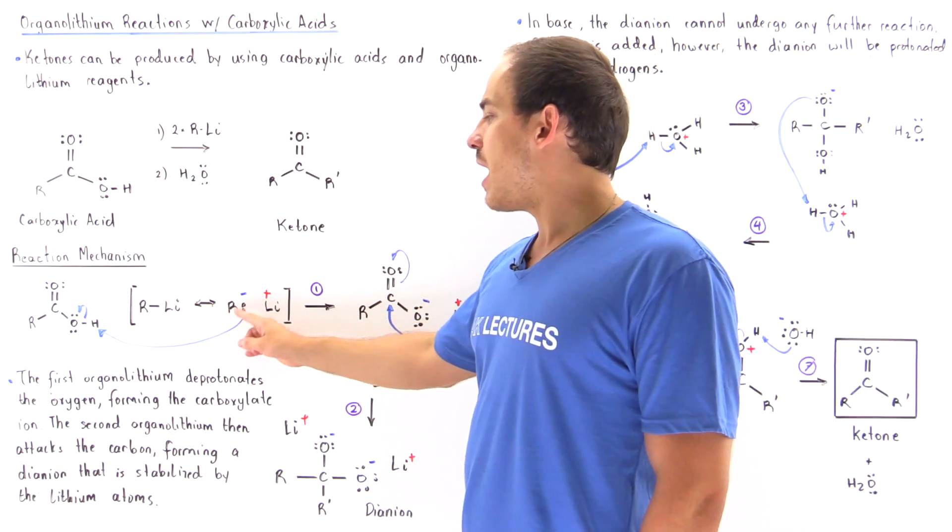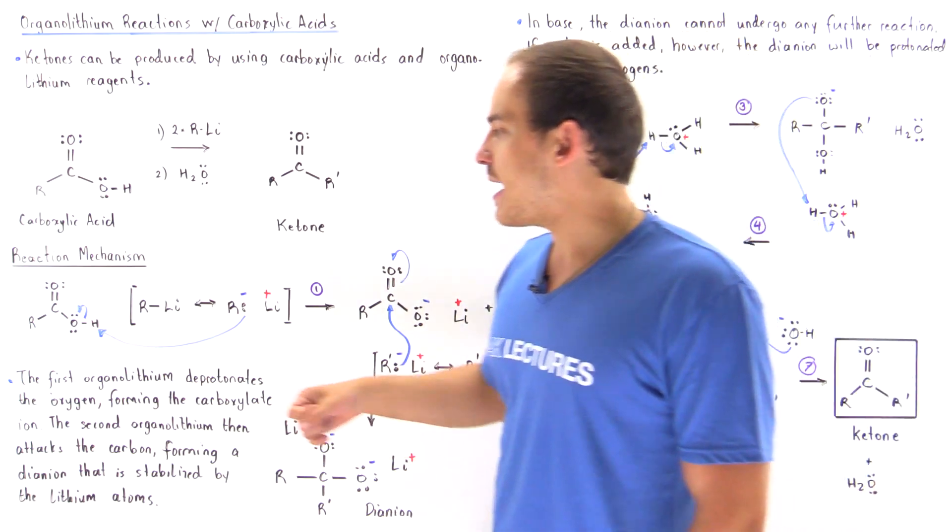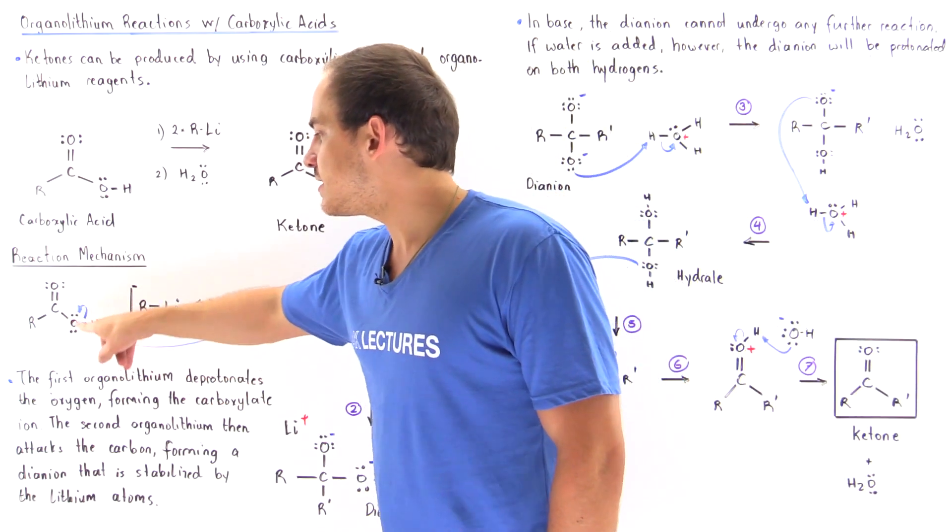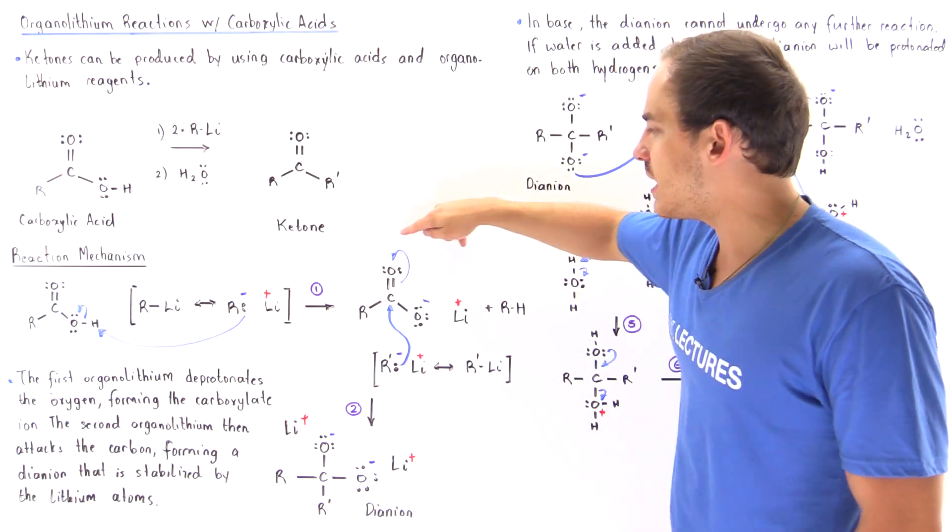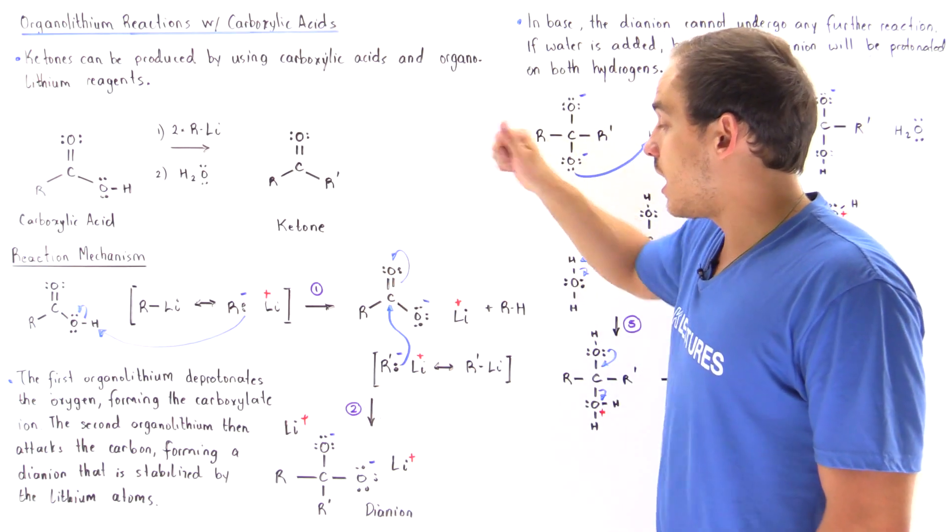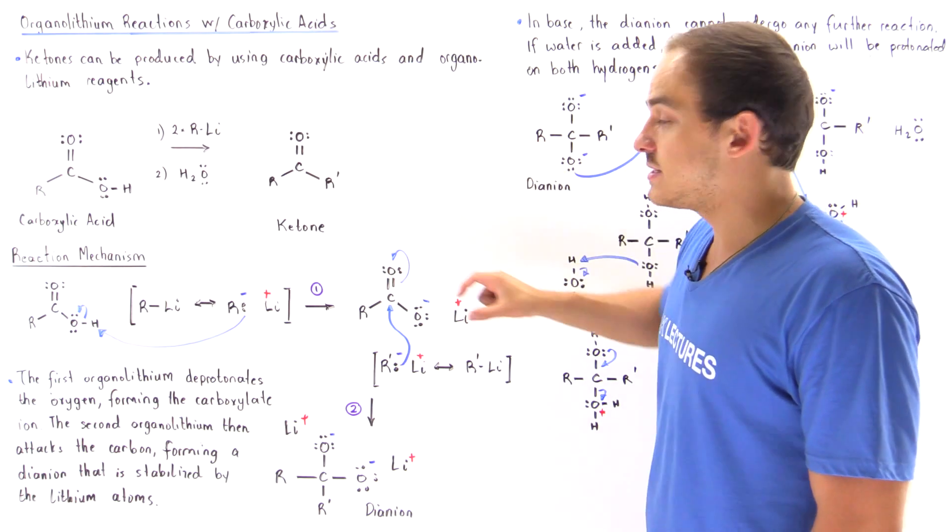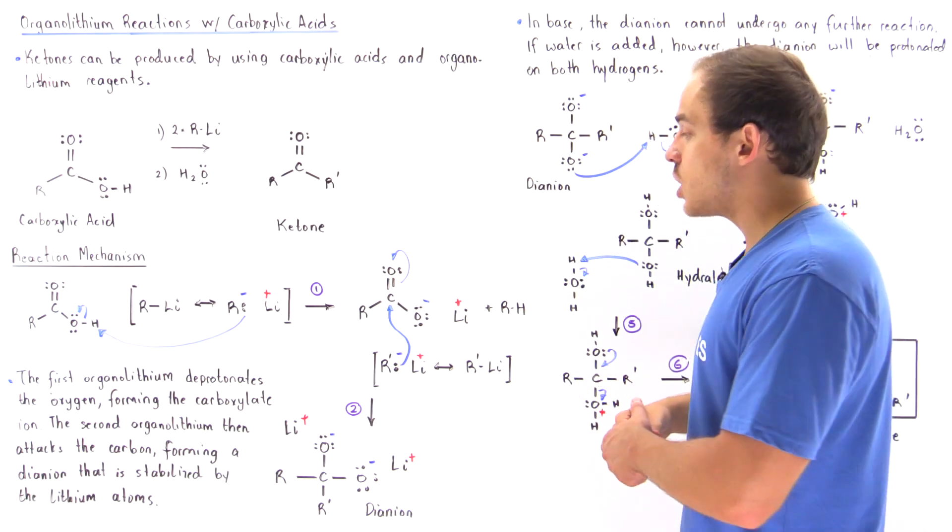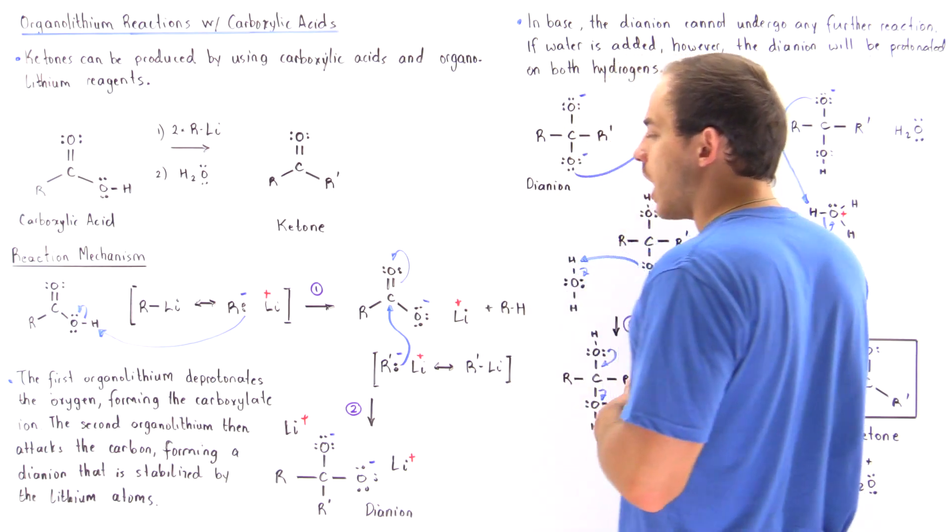This molecule acts as a Lewis base, deprotonating the oxygen by taking off the H atom and forming a resonance stabilized carboxylate ion that contains a delocalization of charge between the two oxygens.